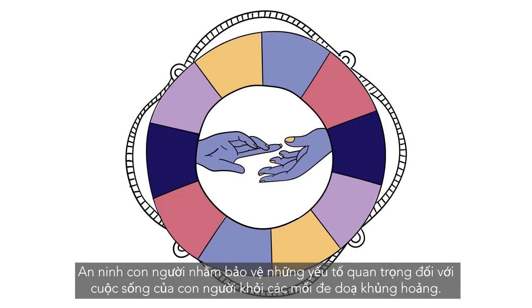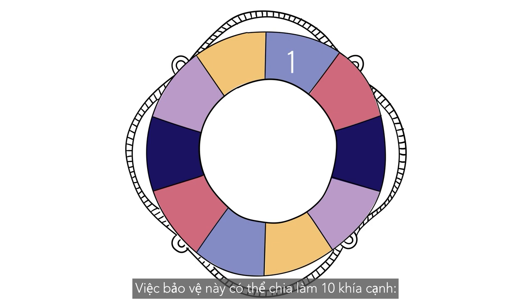Human security safeguards the vital core of all human lives from critical threats. These protections can be broken down into 10 dimensions.